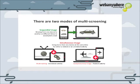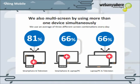An example of sequential usage is starting to search for something on your mobile phone, getting some initial results, and then taking those results and using them on the laptop later in the day. Simultaneous usage is when you've got one screen going, perhaps the TV, and then another device used for things like social networking or playing games.